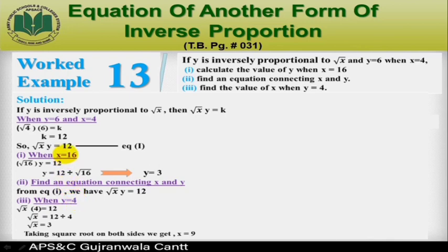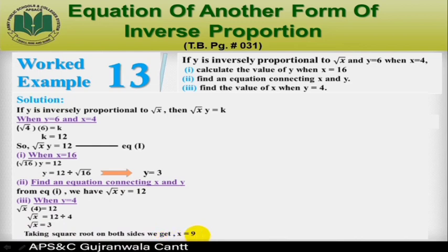For part three, we calculate the value of x when y = 4. Substituting y = 4 into Equation 1, we get √x · 4 = 12, so √x = 3. Taking the square on both sides, x = 9.